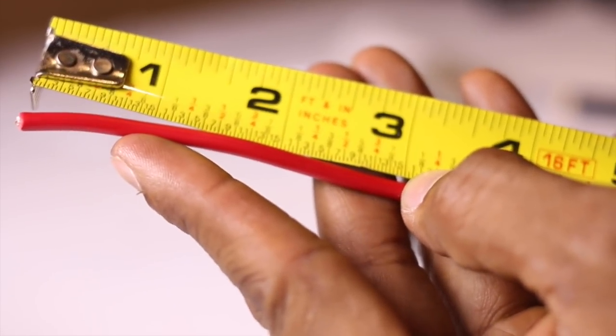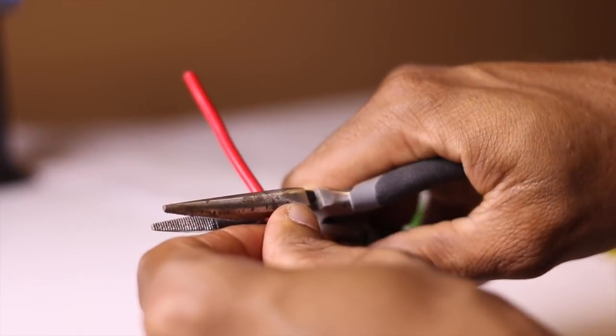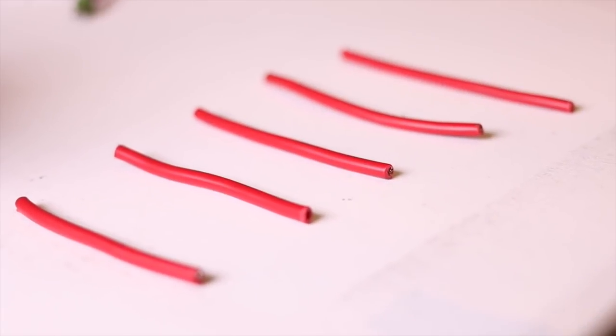Take the 12 gauge wire and start cutting them into a desired length. You'll be needing five pieces of these wires.